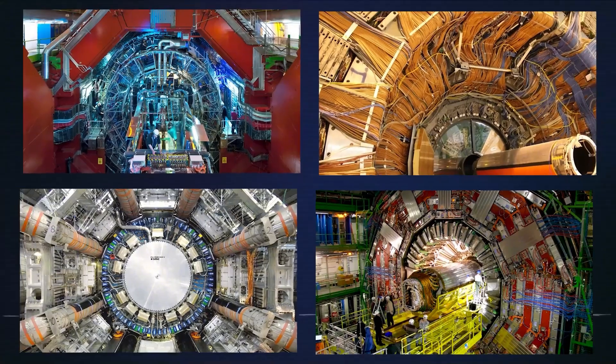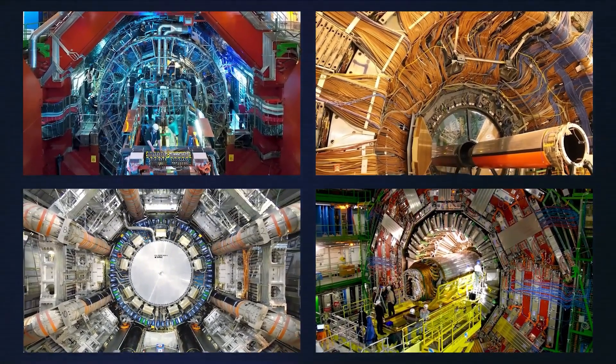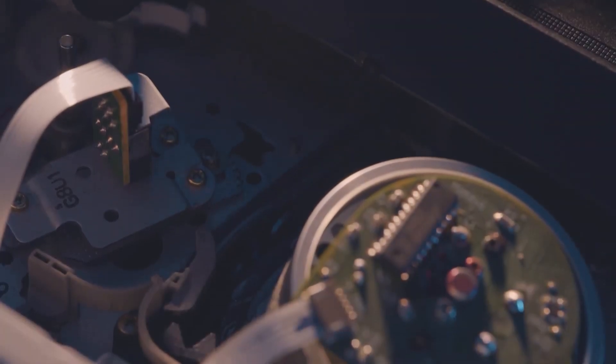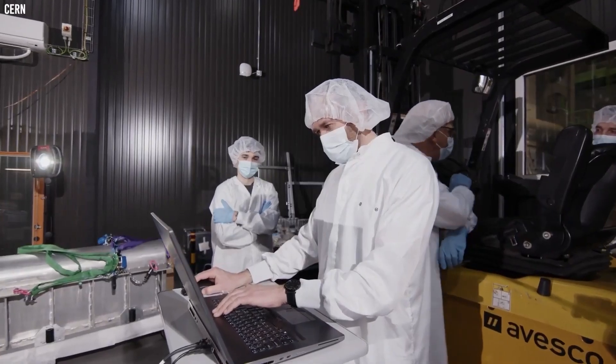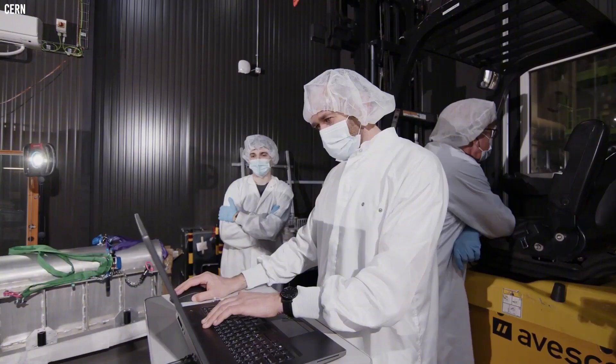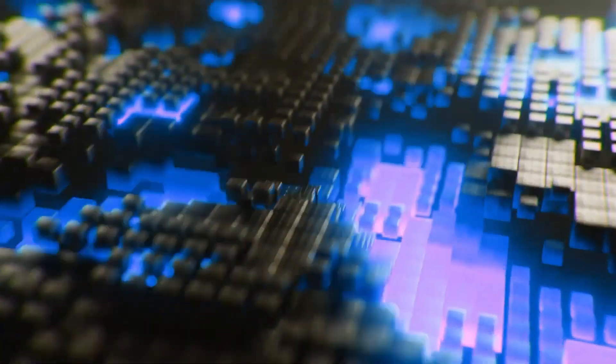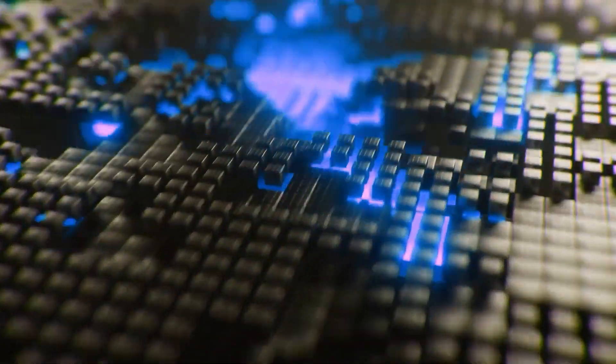CERN's work is not reliant on just one experiment or one machine. Along the LHC's ring, several detectors are positioned, including ATLAS, CMS, ALICE, and LHCB. Each of these experiments examines collisions from a different perspective, allowing scientists to explore a wide range of phenomena.